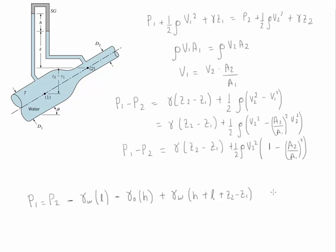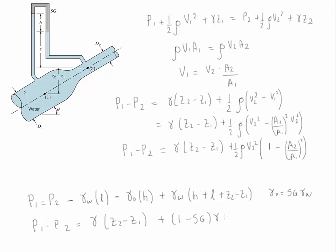Recall from the previous chapter that gamma of oil is simply the specific gravity times gamma of water. Substituting all these values and solving for P1 minus P2, this relationship becomes gamma (Z2 minus Z1) plus (1 minus specific gravity) times gamma of water times H.